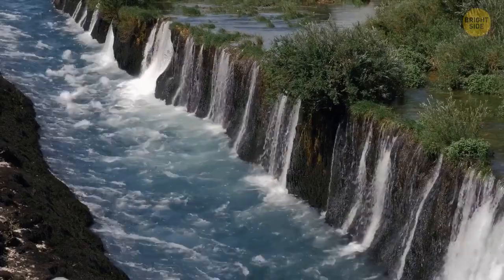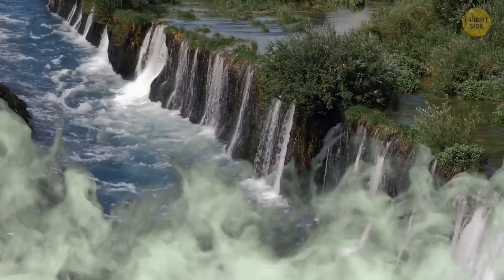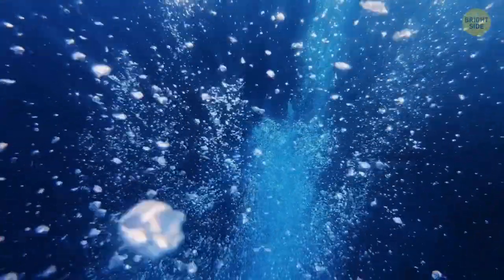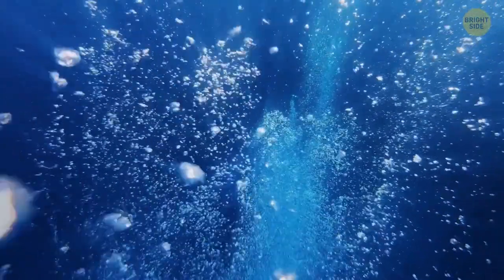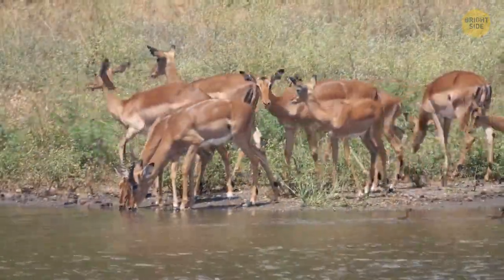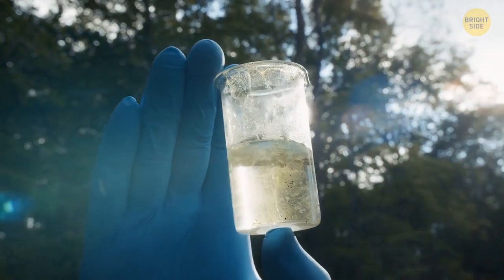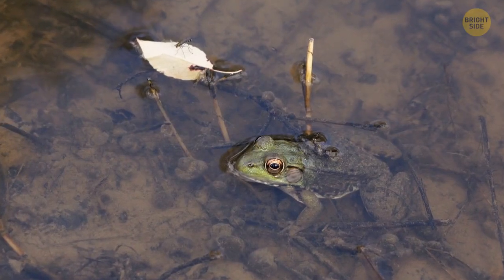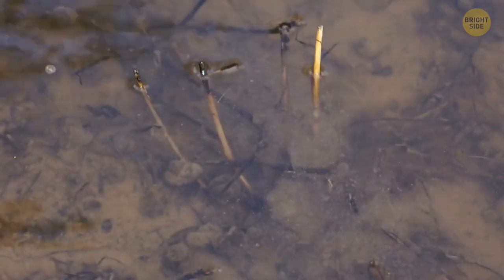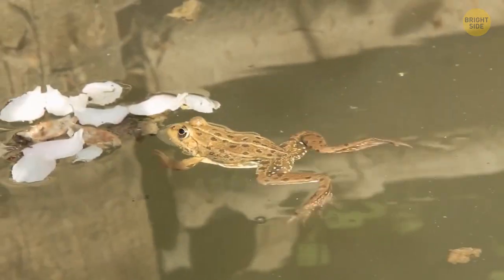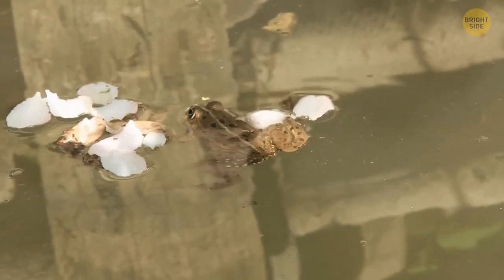Lakes, ponds, and canals become slightly warmer and start to stink before an earthquake. It happens because gases get released when tectonic plates shift. Most animals feel these signs and change their behavior. For example, scientists noted toads completely disappearing before an earthquake in Italy in 2009. But as soon as the natural disaster was over, they returned.